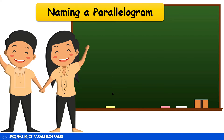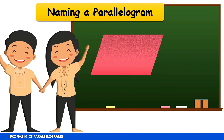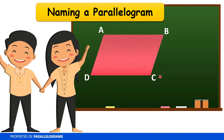Before we proceed with properties of parallelograms, let's have naming a parallelogram. So how are we going to name a parallelogram? Let's have this illustration. In naming a parallelogram, we are going to use the vertices of the given parallelogram. For example, we have the following vertices: A, B, C, and D.